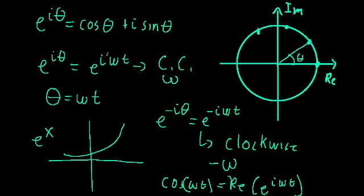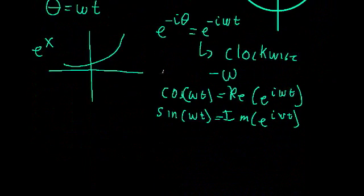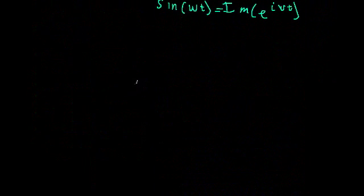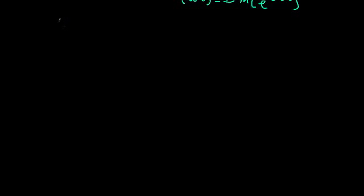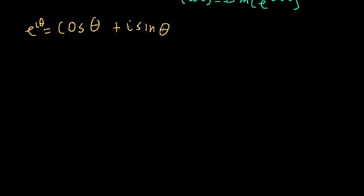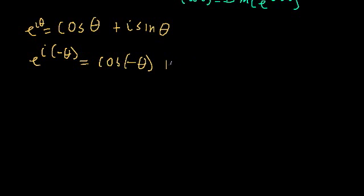Now I want to talk about the relationship between sinusoids and the complex exponential a little further. To do that, we need to use algebra to find some new equations. Let's start by rewriting Euler's formula: e to the i theta equals cosine theta plus i times sine theta. Let's also look at e to the i times negative theta, which equals cosine of negative theta plus i times sine of negative theta.